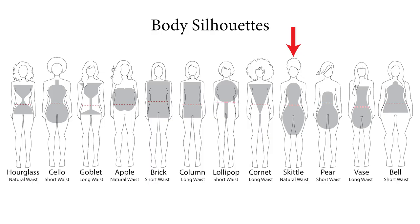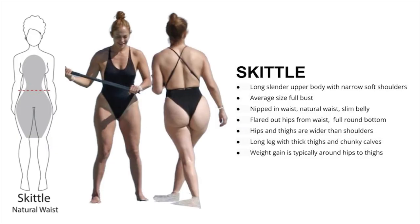We finally come to the bottom-heavy portion of the silhouettes — a large portion of people fall under one of these four shapes. Let's start with the skittle. Here are the key features: long, slender upper body with narrow soft shoulders, average size full bust, nipped waist at the natural position, slim belly. Hips flare out from the waist, full round bottom — hips and thighs are wider than the shoulders. Long legs with thick thighs and chunky calves. Weight gain is typically around the hips and thighs.